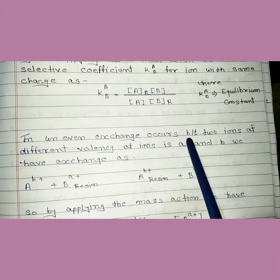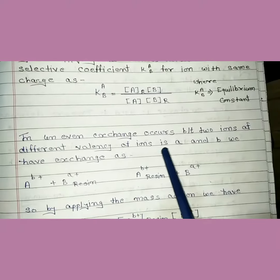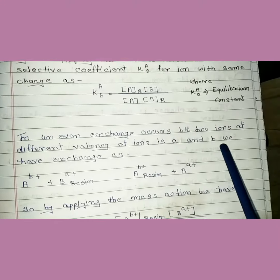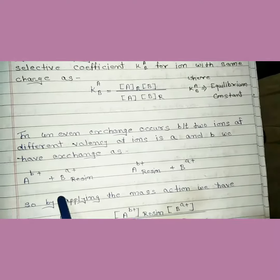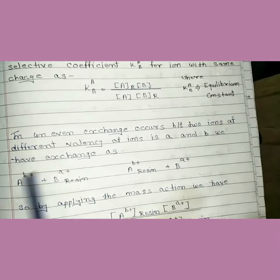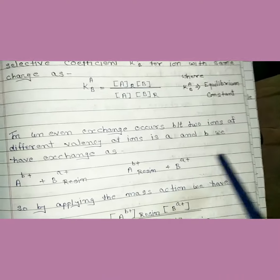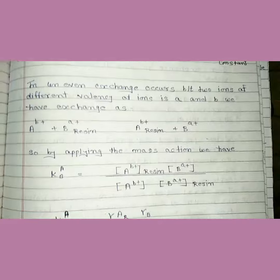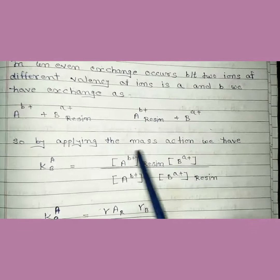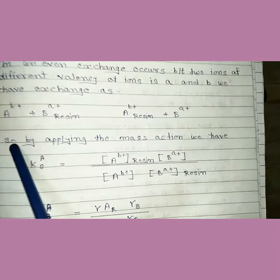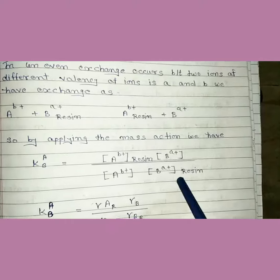When ion exchange occurs between two ions of different valency, we have ions A and B exchanging, represented as A B-plus and B A-plus, where the resin acts as reactant converting to product. By applying the law of mass action, the equilibrium expression is written as product over reactant, giving us the equilibrium constant for this exchange.